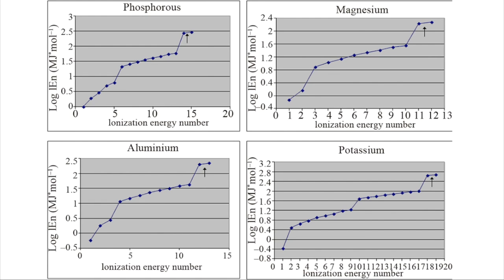So we've got four elements there: phosphorus, magnesium, aluminum, and potassium. These four graphs show how in the case of phosphorus its 15 ionization energies compare with each other. Magnesium is 12, aluminum is 13, potassium is 19.